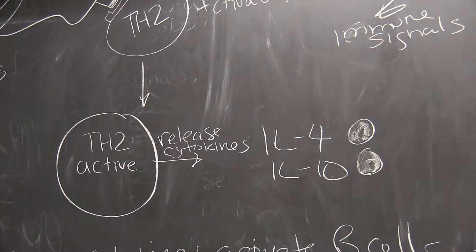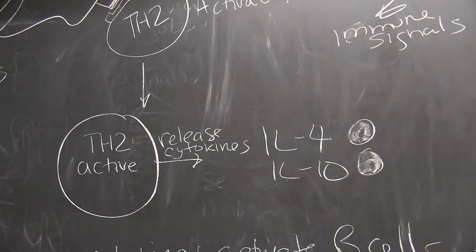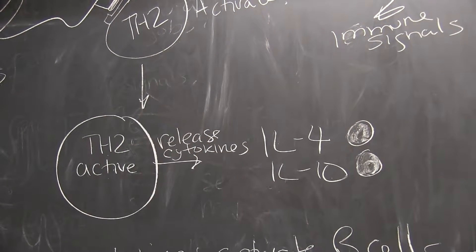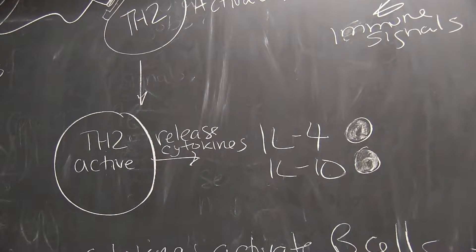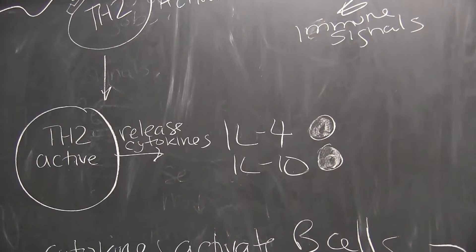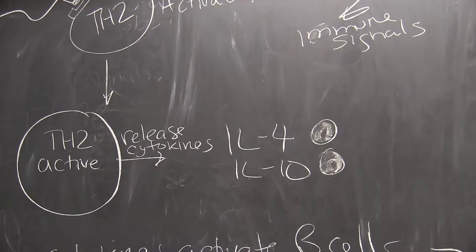Because this is a TH2 cell and we ultimately want to get production of antibodies, a different mixture of cytokines are released. We're going to call these IL-4 and IL-10.